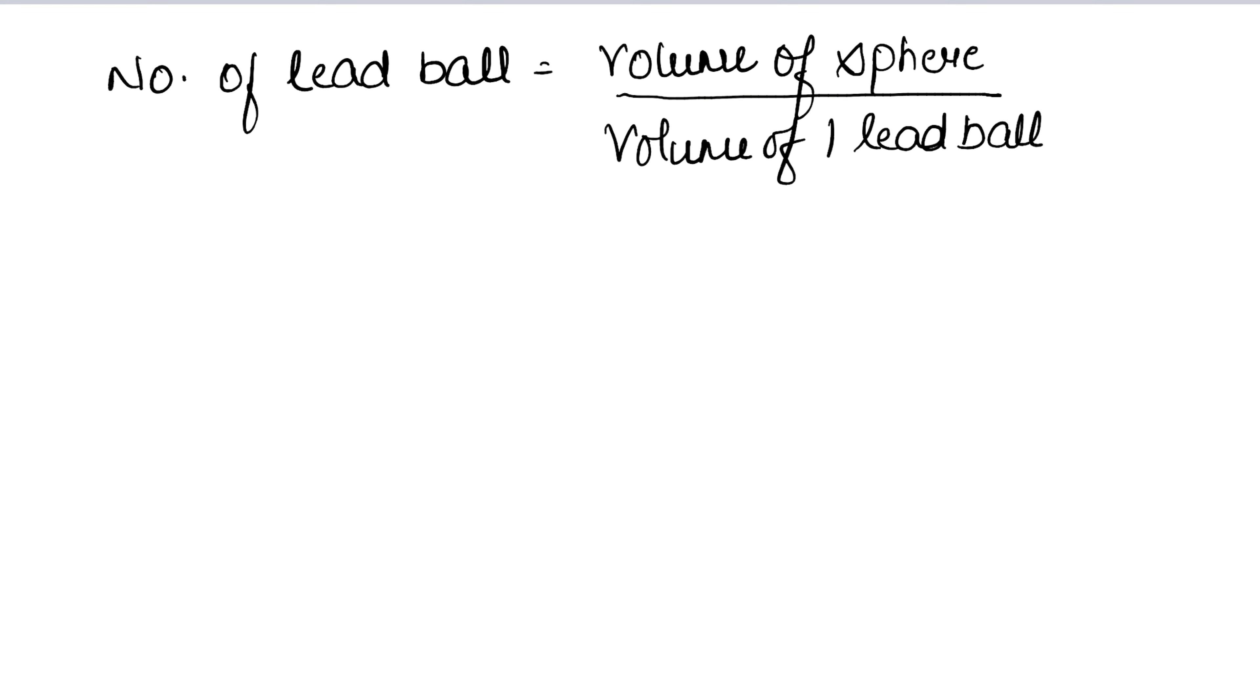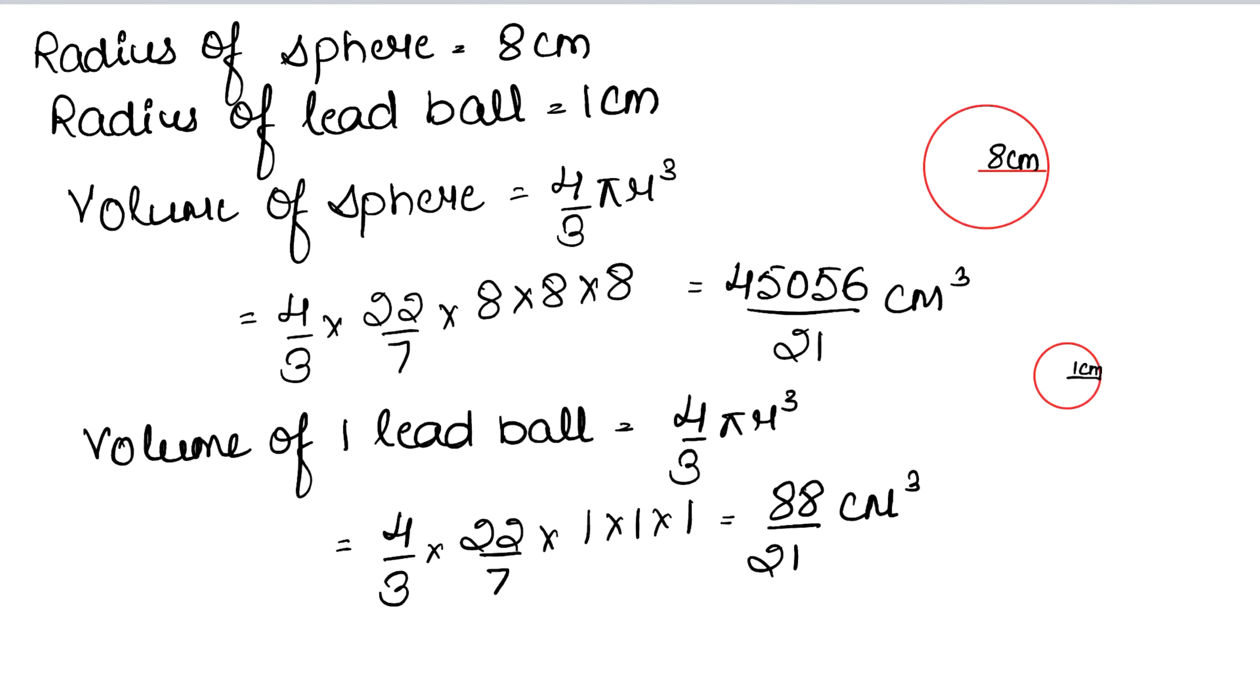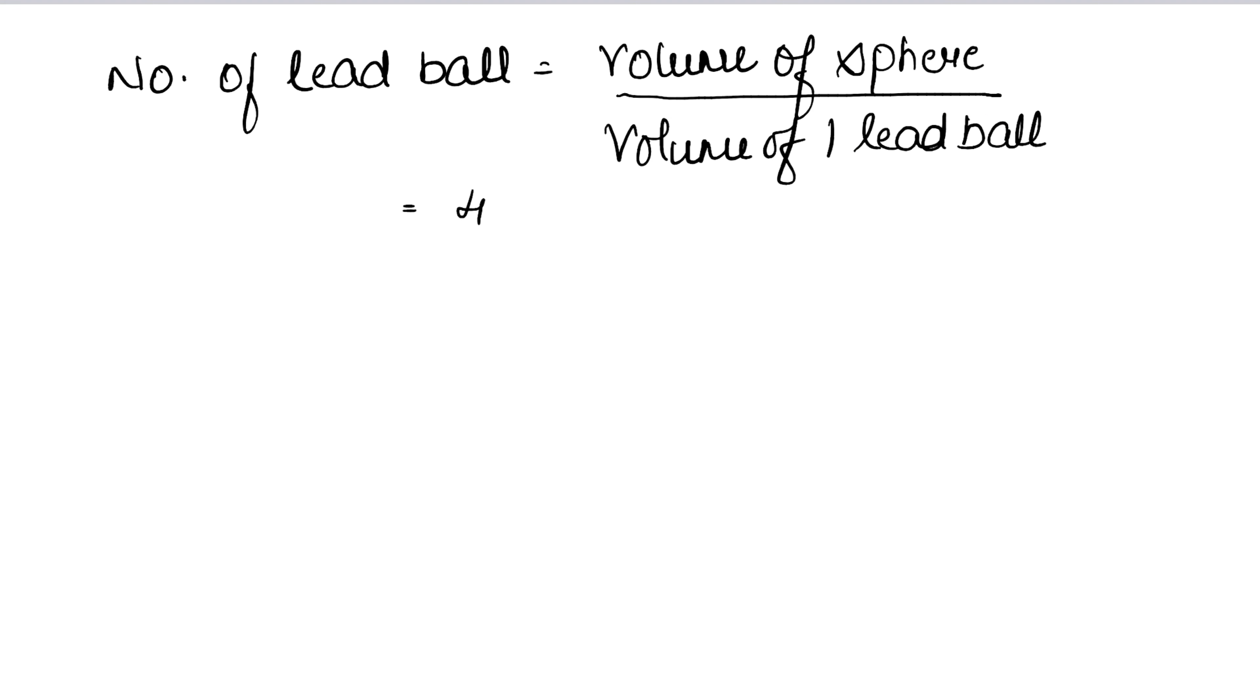So what do we get? The sphere's volume is 45056 upon 21, and the lead ball's volume is 88 upon 21. So we can write this as 45056 upon 21 into 21 upon 88.